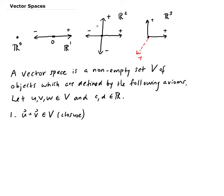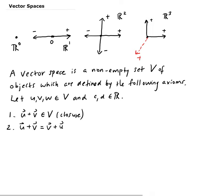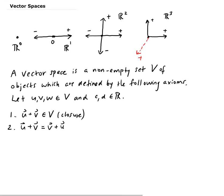Secondly, we have the commutative property, which means you have u plus v. This is the same as v plus u. That's for commutative property.